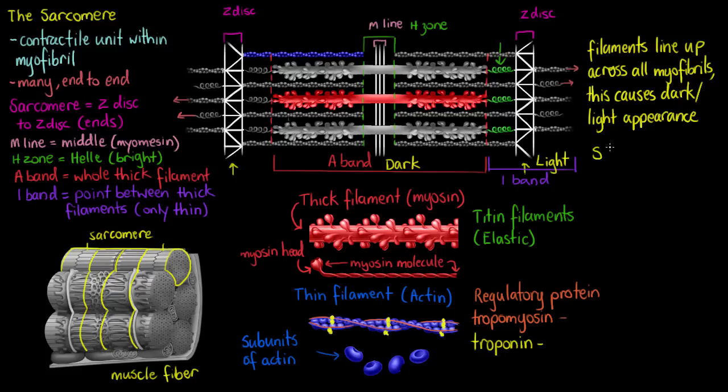This is what's going to cause something that we call striations. Striations meaning it's going from light to dark to light to dark to light to dark. And that's going to be caused by our A-bands, our dark bands, and our I bands which are our light bands going one after the next, sarcomere to sarcomere to sarcomere, all the way along our myofibrils within the muscle fiber or the muscle cell itself.